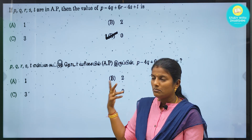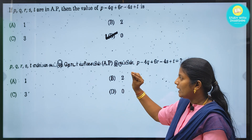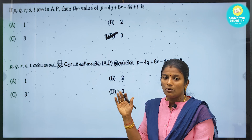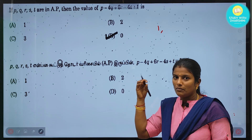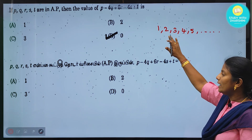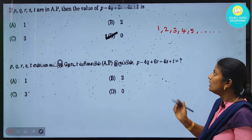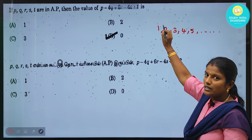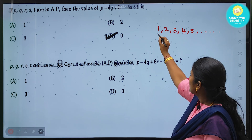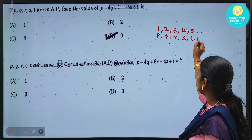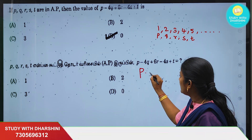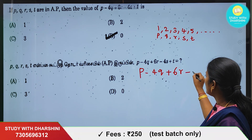Moving to the next question involving a sequence P, Q, R, S, T. If we add one number in the preceding term, we see P=1, Q=2, R=3, S=4, T=5. So the common difference is 1 — this is an AP. We can now solve the expression P - 4Q + 6R - 4S + T.